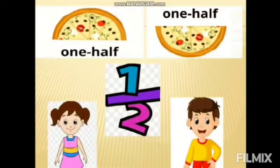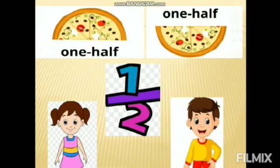This is Simmi. She has a large sized pizza and she loves pizza. Now suddenly Simmi's friend Shyam arrives at her home and he is hungry too. So Simmi gives half of her pizza to Shyam — one half she will keep for herself and the other half she will give to Shyam.